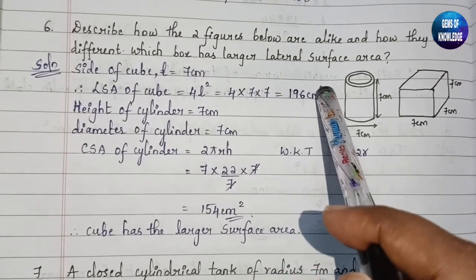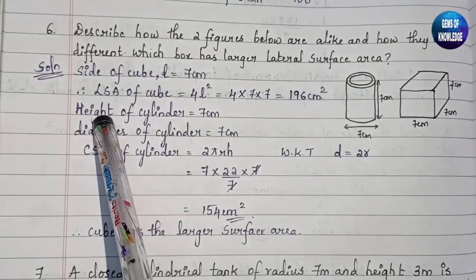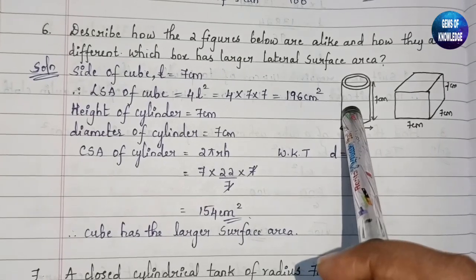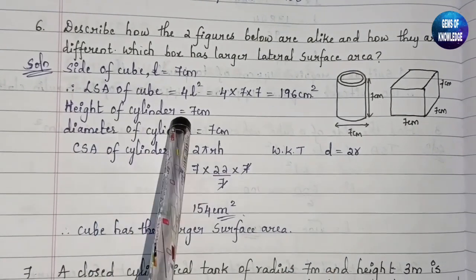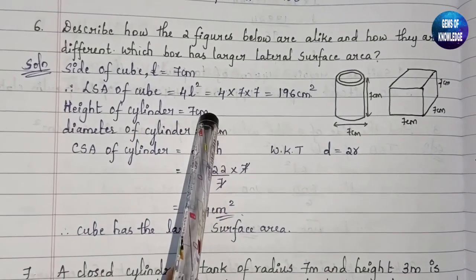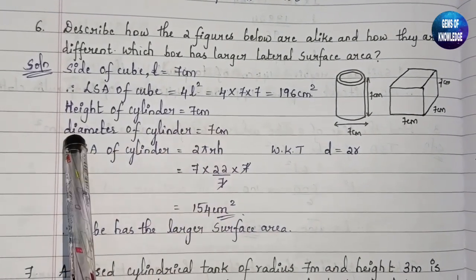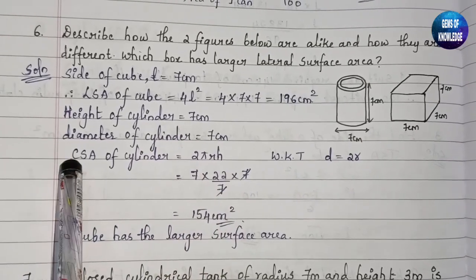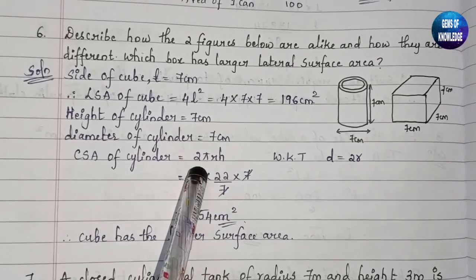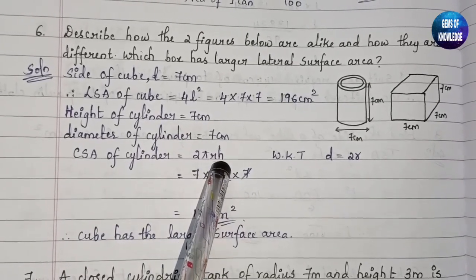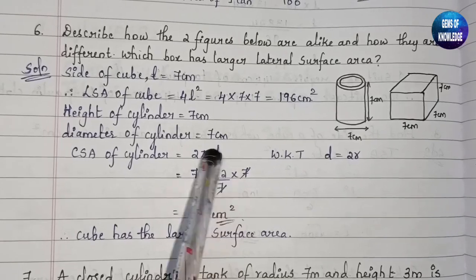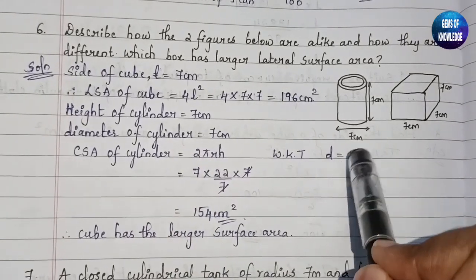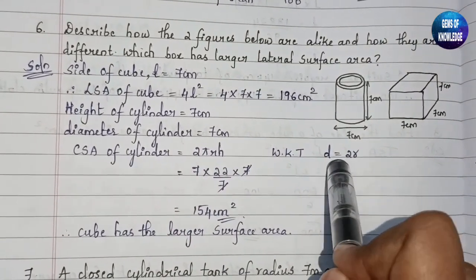The LSA of the cube comes out to 196 cm². Now for the cylinder: height h = 7 cm and diameter = 7 cm. The CSA of the cylinder is 2πrh. We know that diameter = 2r, so 2r equals two times the radius.